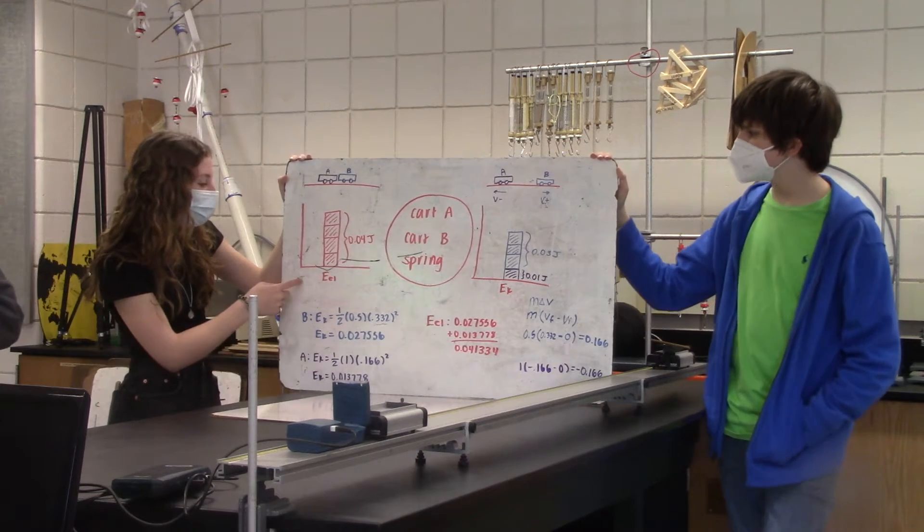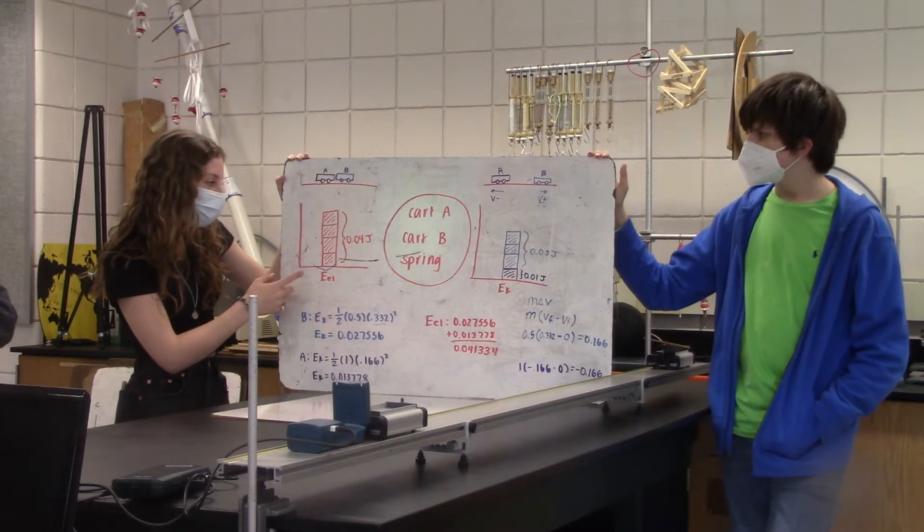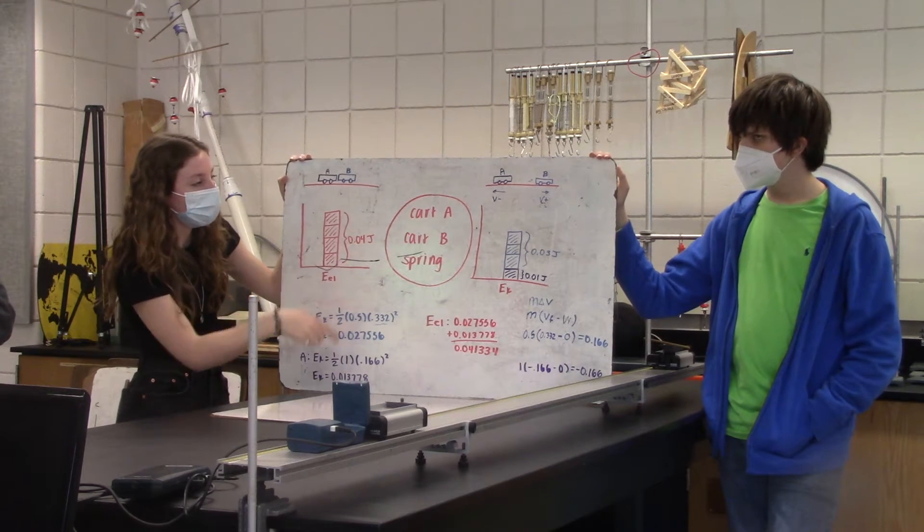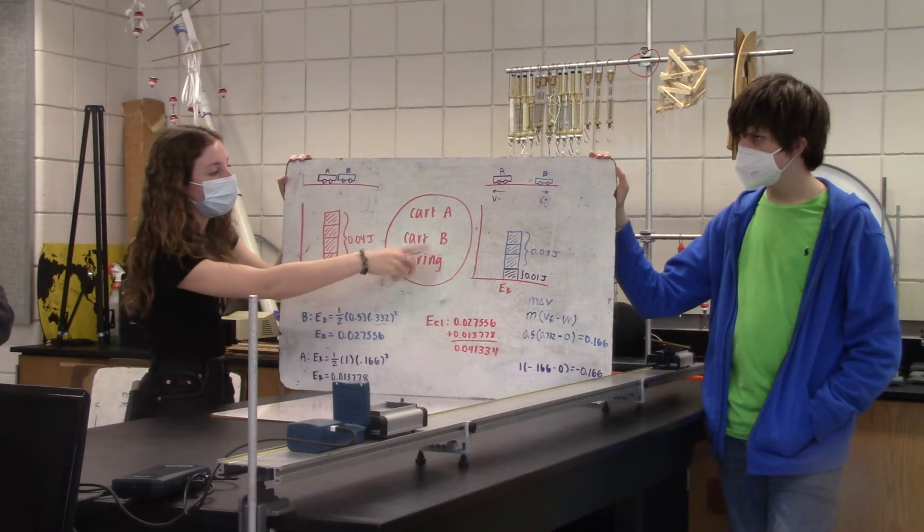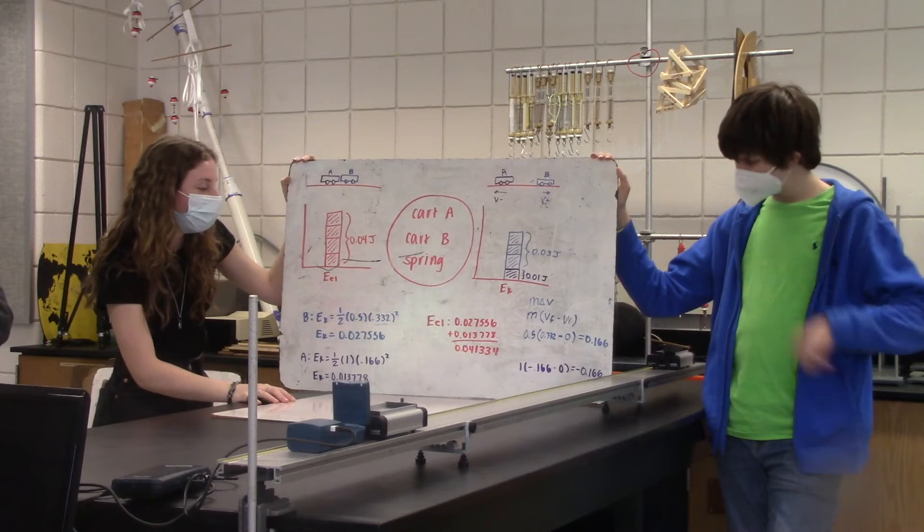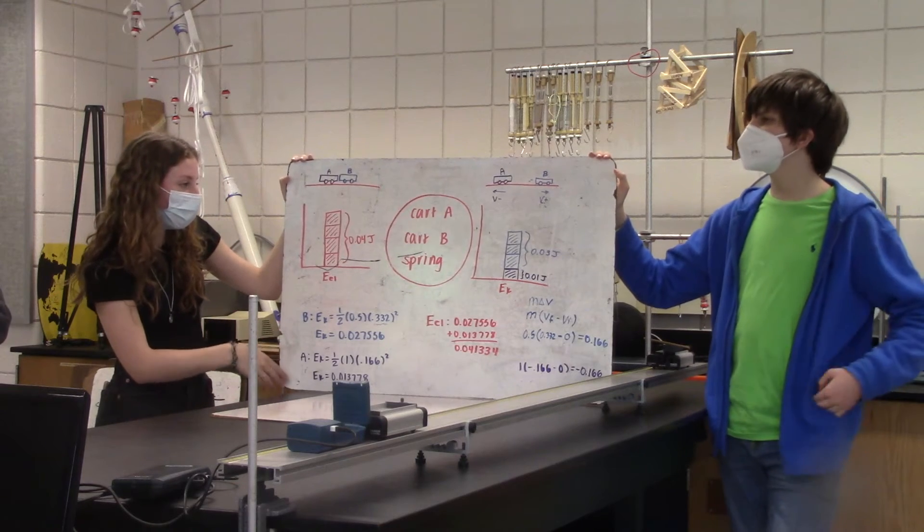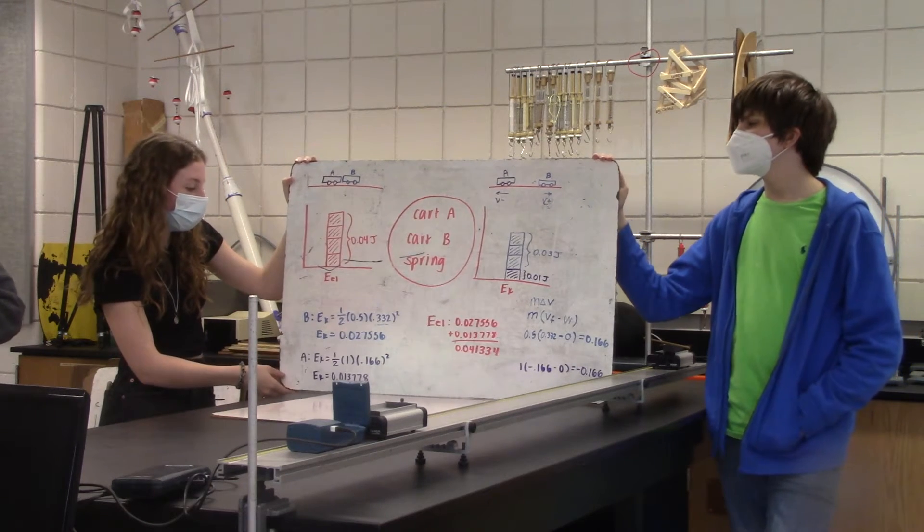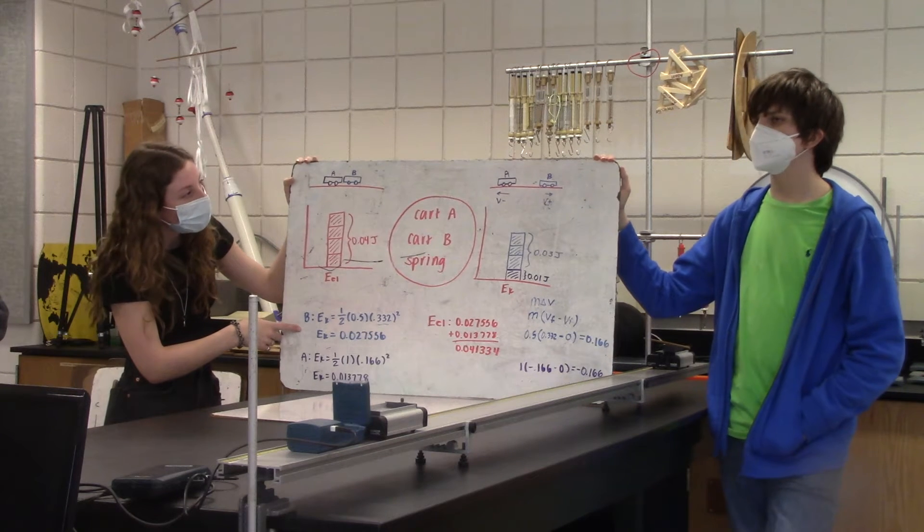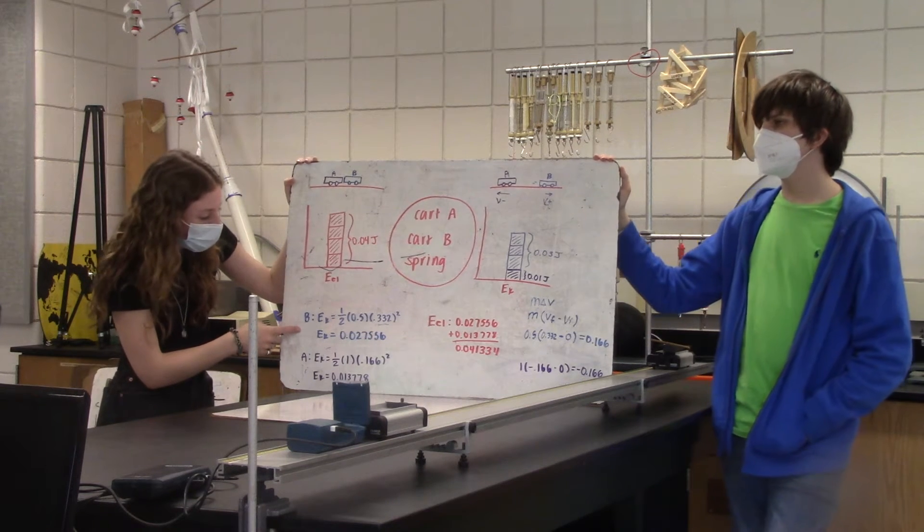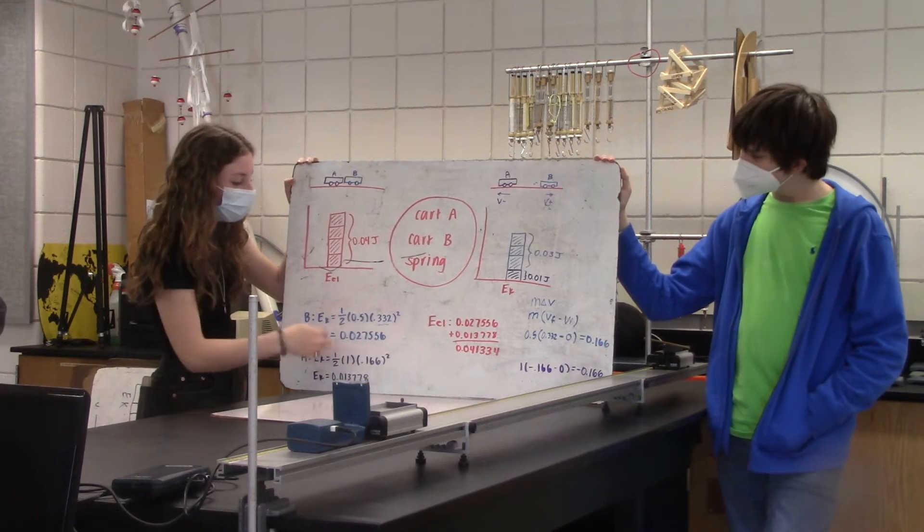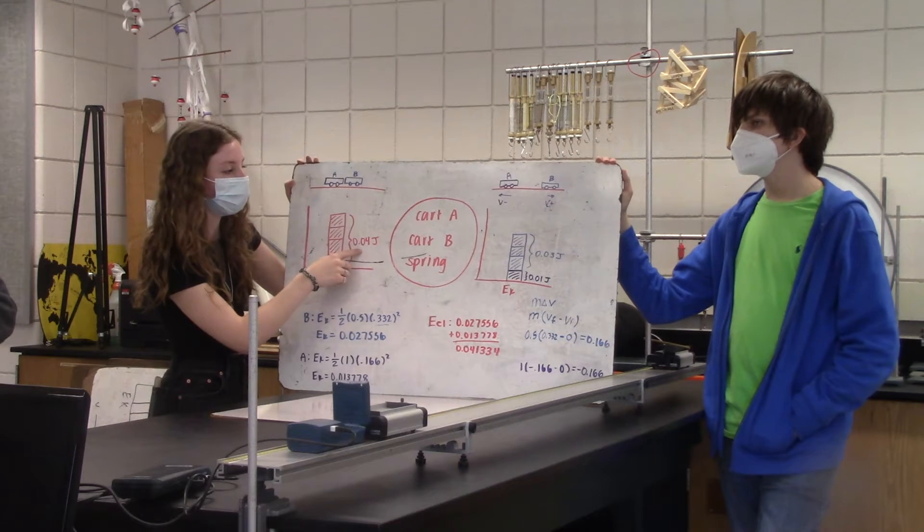In the beginning, it was all elastic energy because it was all the spring and then in the end it was kinetic energy and we had it split for each cart. And then to get the values for the elastic and the kinetic, we actually started by getting the kinetic energy for each cart. And then after we got those, we added it together to get the elastic energy.